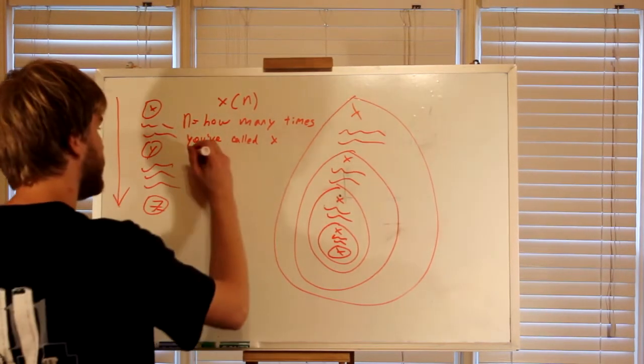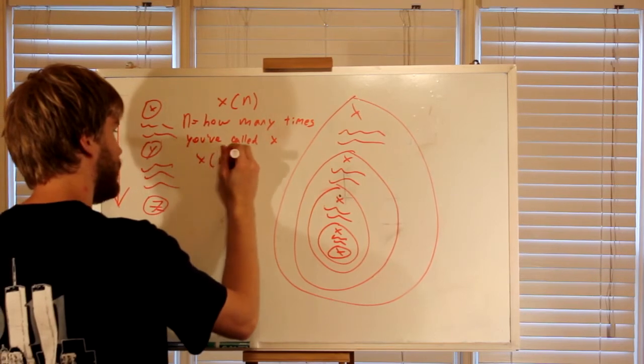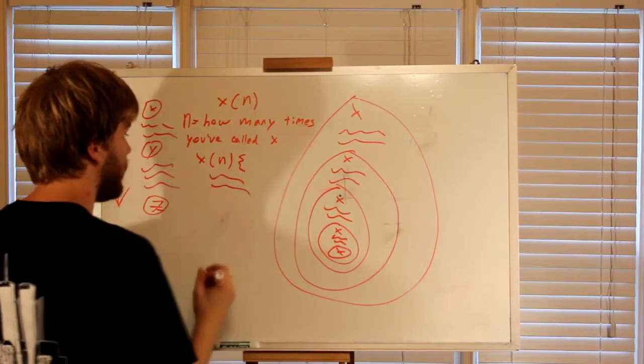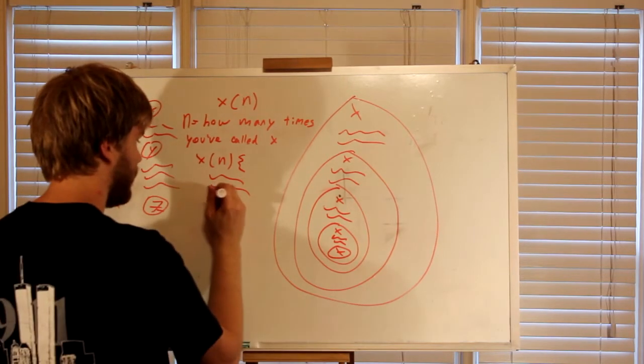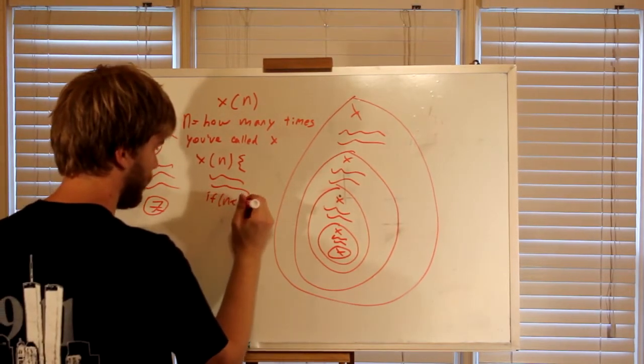Okay? So, the way you can make it look like, so you have X, N, you have your lines of code, and then you can put down an if statement. If N is less than four,